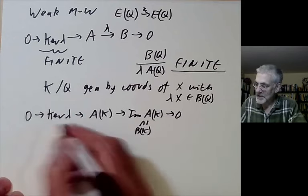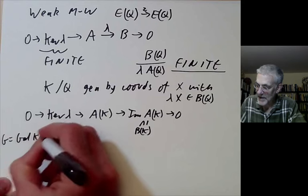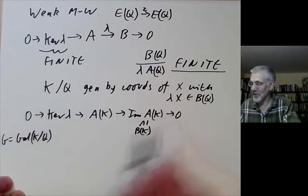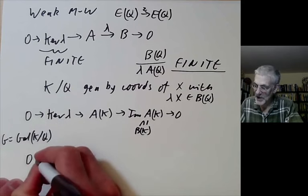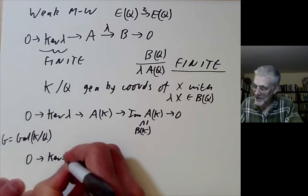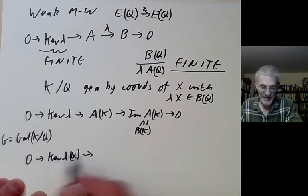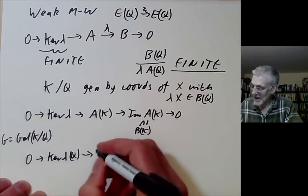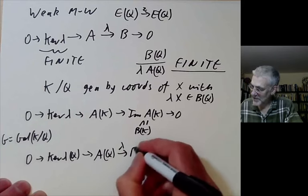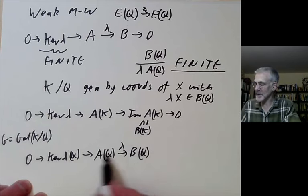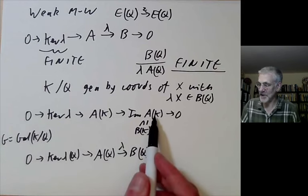What we can do is we can act on this sequence by the group G, which is just the Galois group of K over Q. Here we've got an exact sequence. If we take fixed points under this exact sequence, we get 0 goes to the kernel of lambda over the rational points of this, which is a finite group of very small order. This maps to A(Q), which maps lambda to B(Q). This map isn't surjective. Taking fixed points under a group action is only left exact.